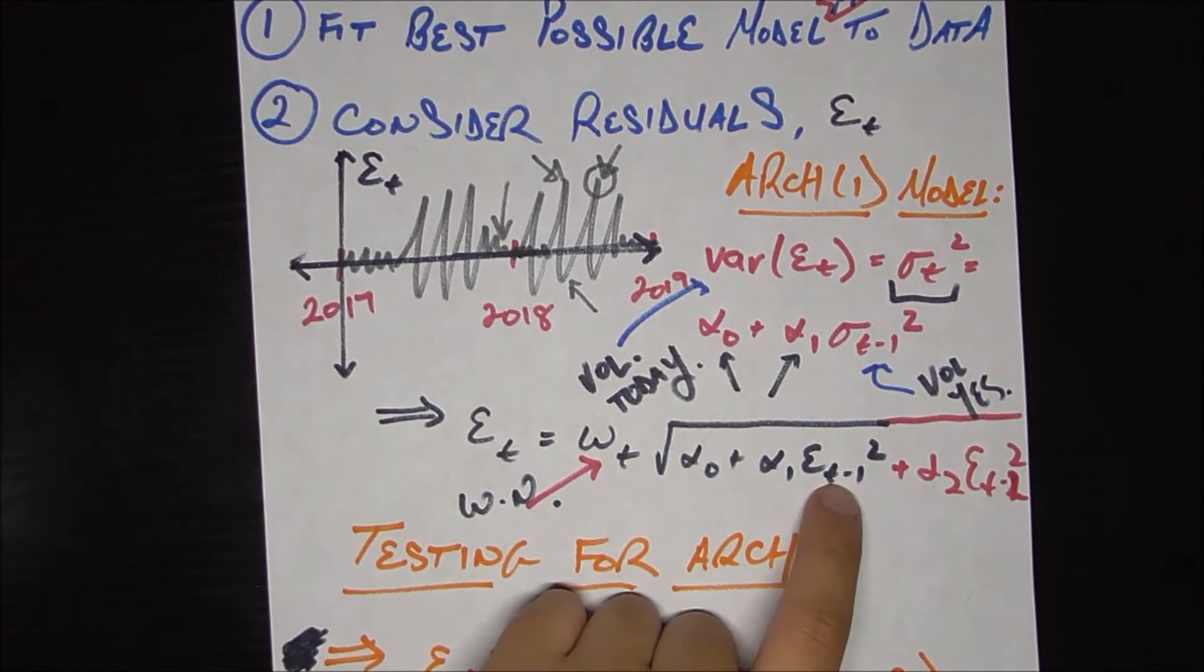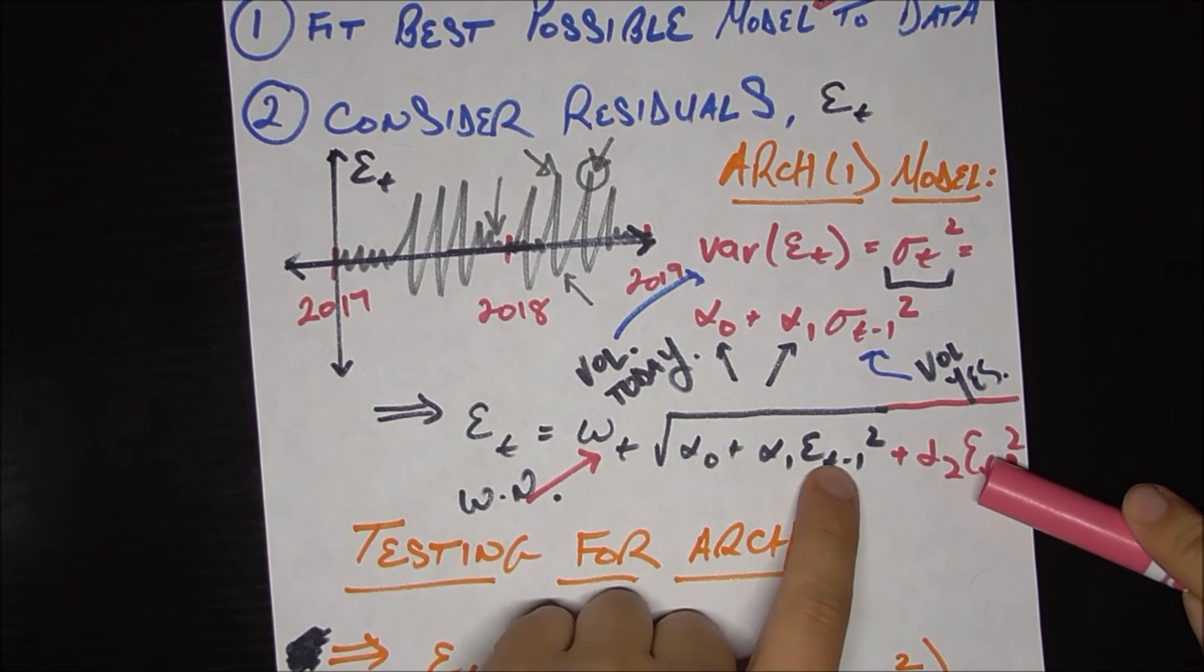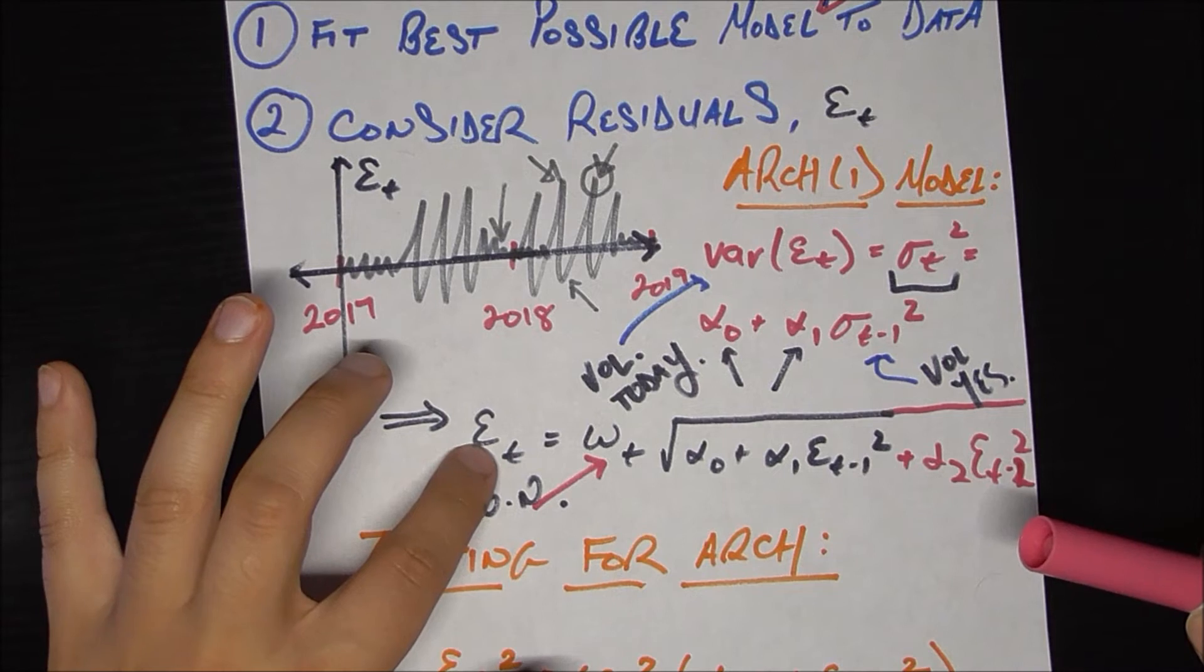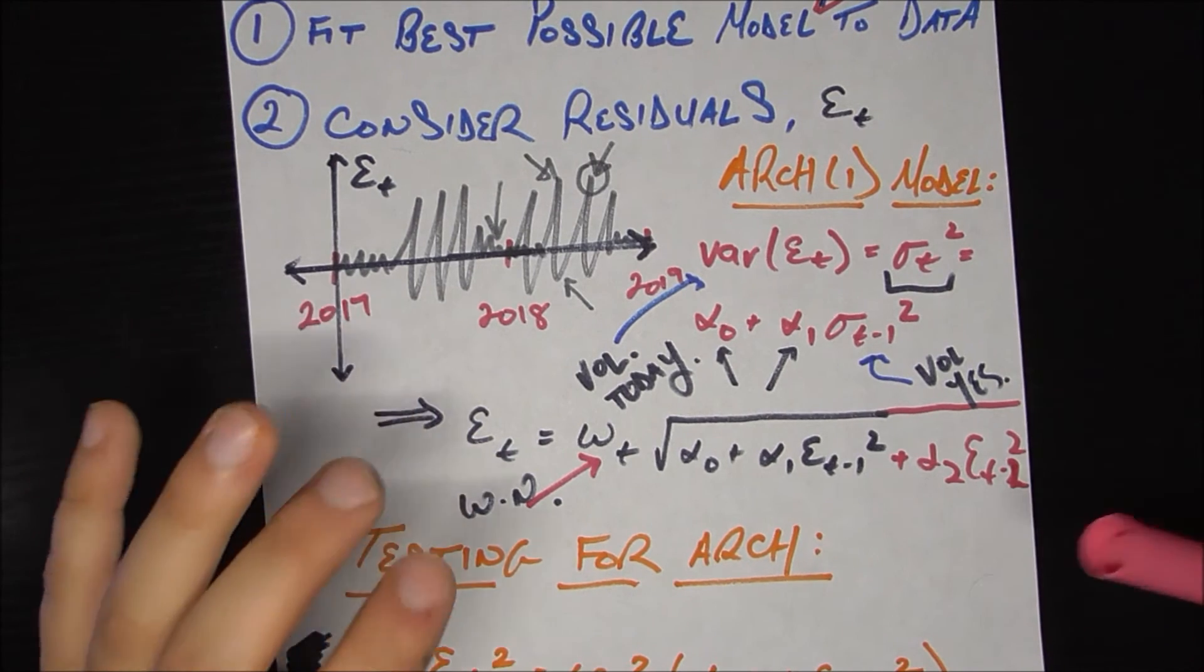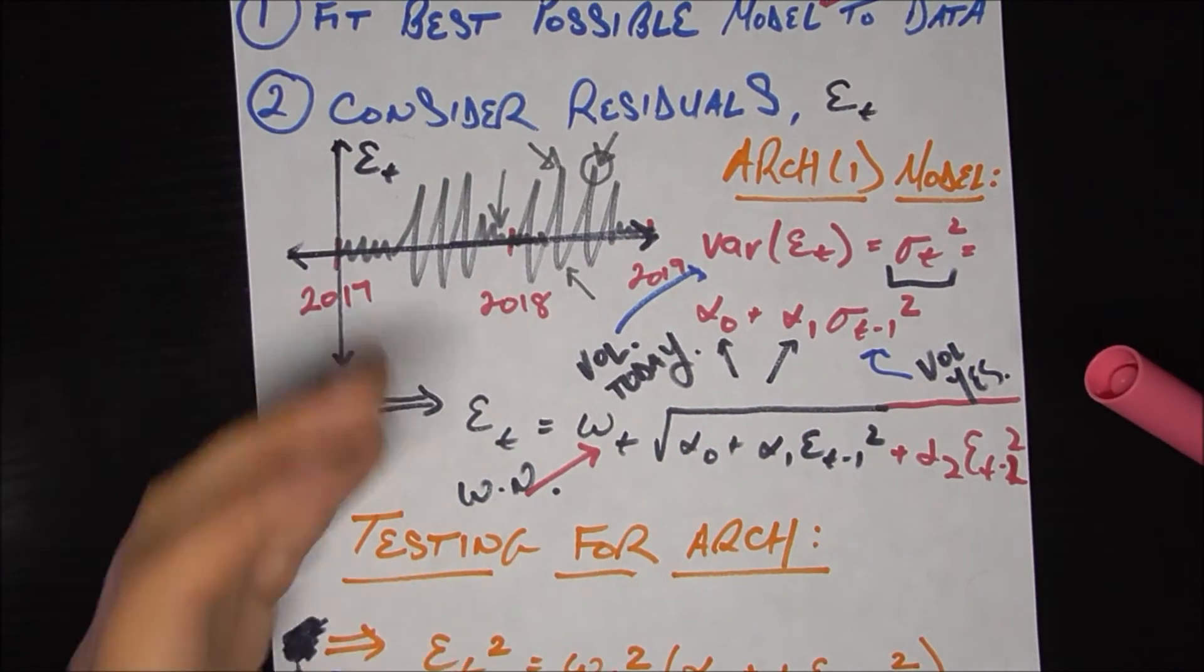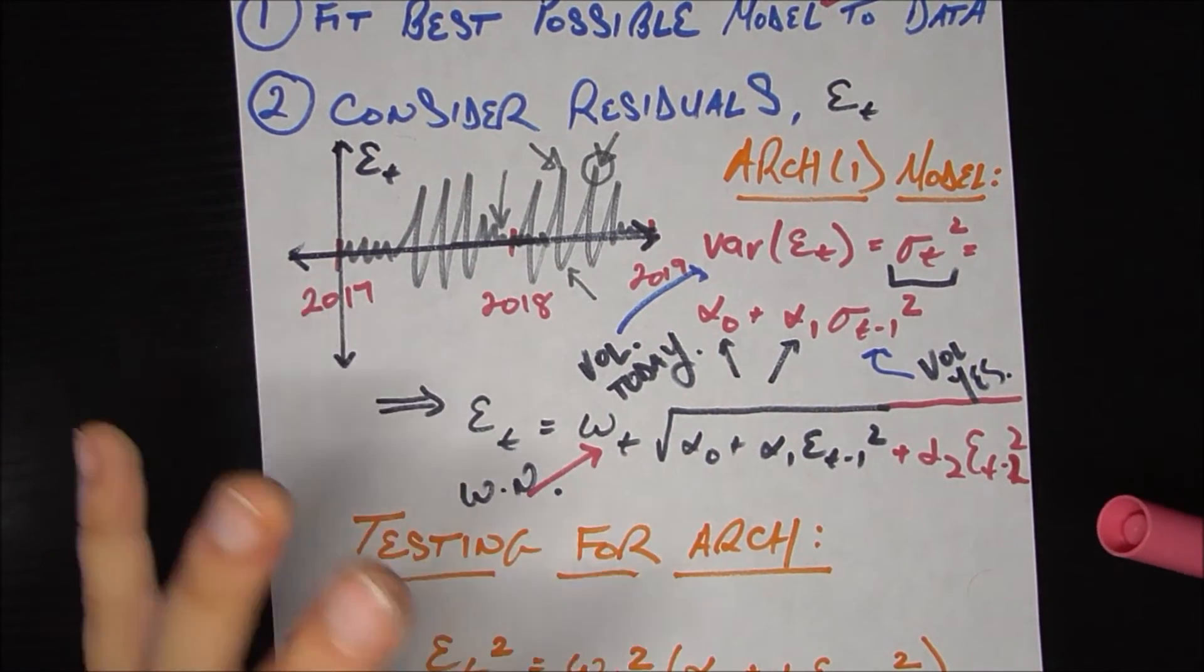Okay, so if your error yesterday or two days ago was really small in magnitude, these are going to be close to zero, which means that the square root term is going to be close to zero. And then your error today is also going to be close to zero. So this fits what our intuition says. High errors today lead to high errors tomorrow, low errors today lead to low errors tomorrow, of course, high and low in terms of magnitude.